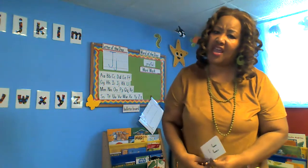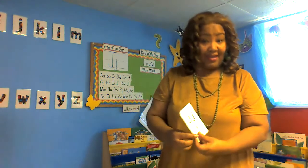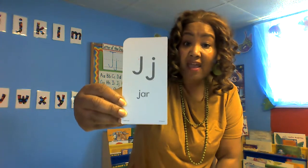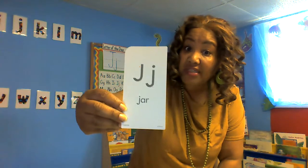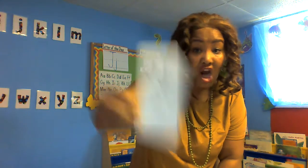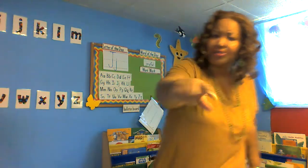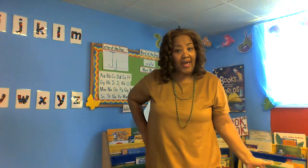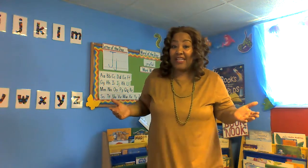What else starts with J? I have a jar. Jar starts with J. Let's see — jar. Spell it with me: J-A-R — jar. J-A-R — jar. One more time: J-A-R — jar. Now clap it: J-A-R — jar. You got it! Now let's see, what else starts with J? Jump. Jack.